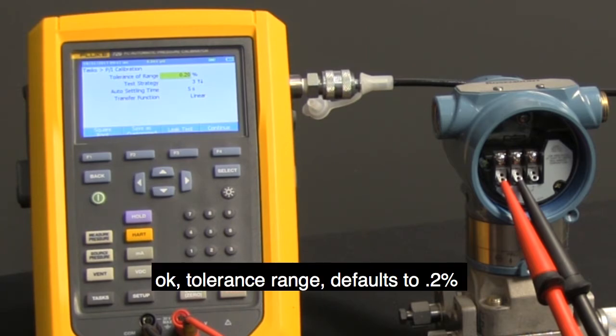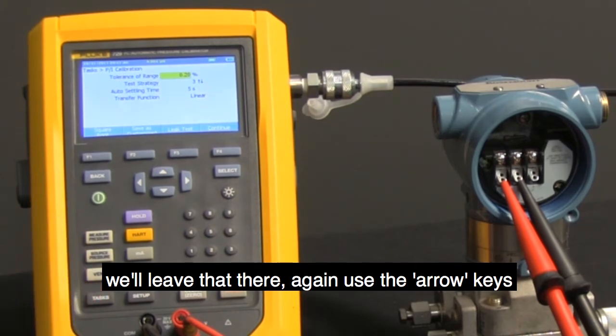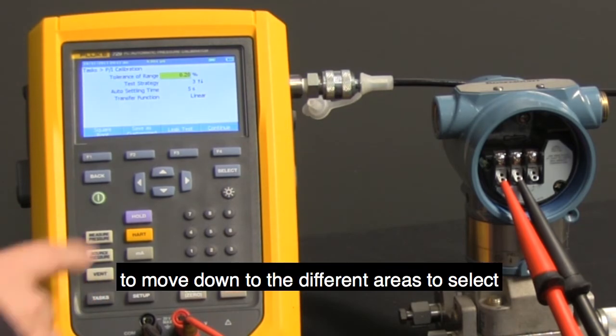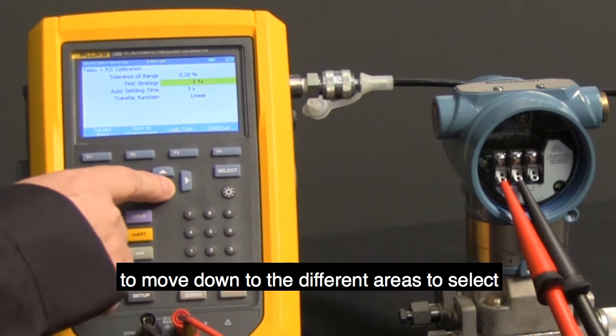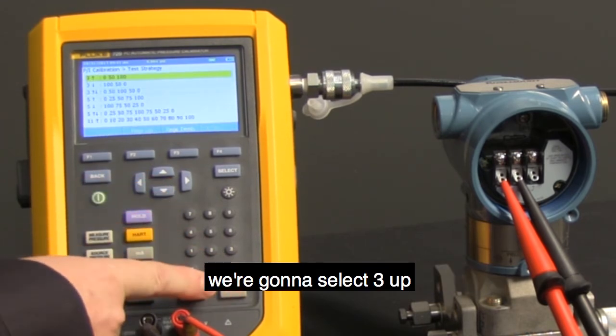Tolerance to range defaults to 0.2%. We'll leave that there. Again, use the arrow keys to move down to the different areas to select. For example, Test Strategy, we're going to select 3 up.